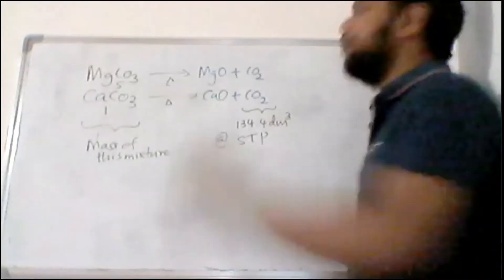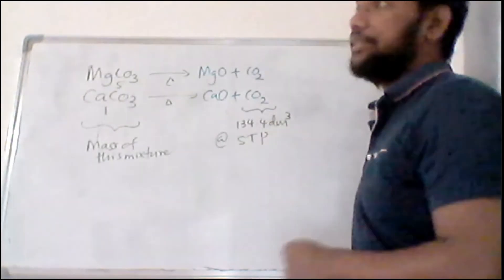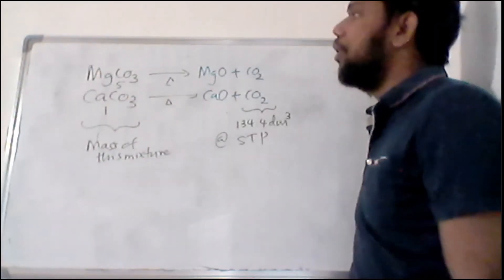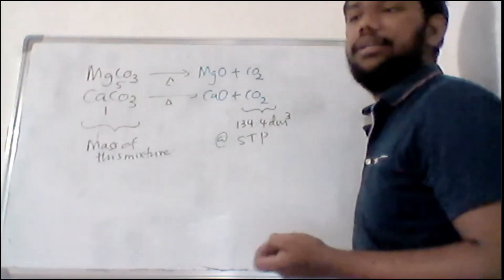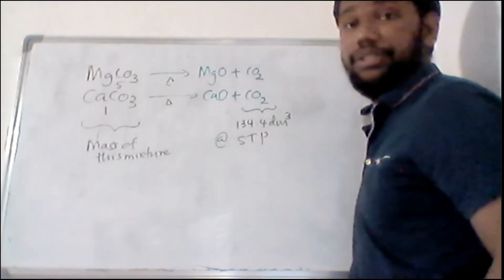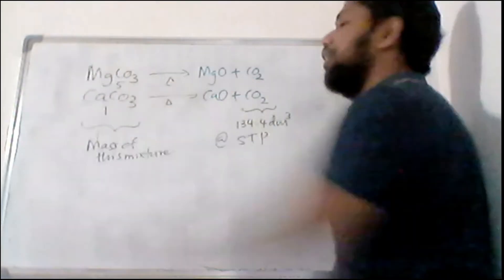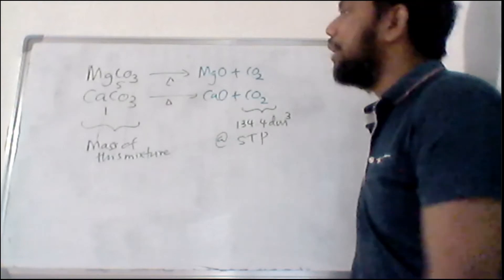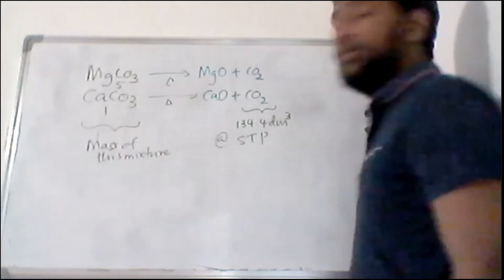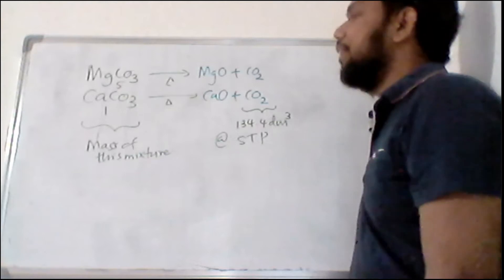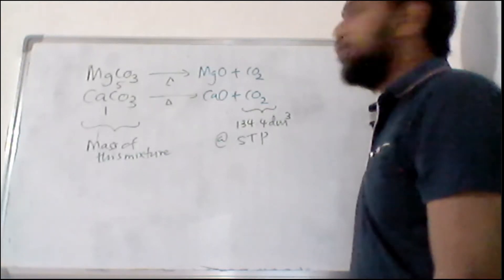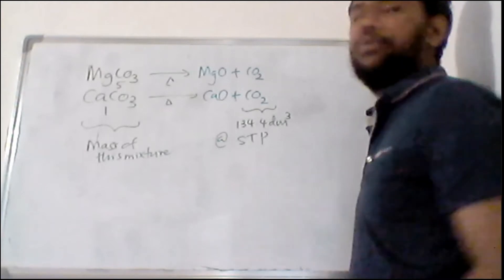The question asks you to find the mass of the carbonate mixture. Normally this type of question would ask for the percentage by weight of magnesium carbonate or calcium carbonate in the mixture, but here they have made it a bit simpler — they just ask for the mass of the mixture. If you know the mass you can eventually calculate the molar ratios and then the weight of magnesium carbonate and its percentage.